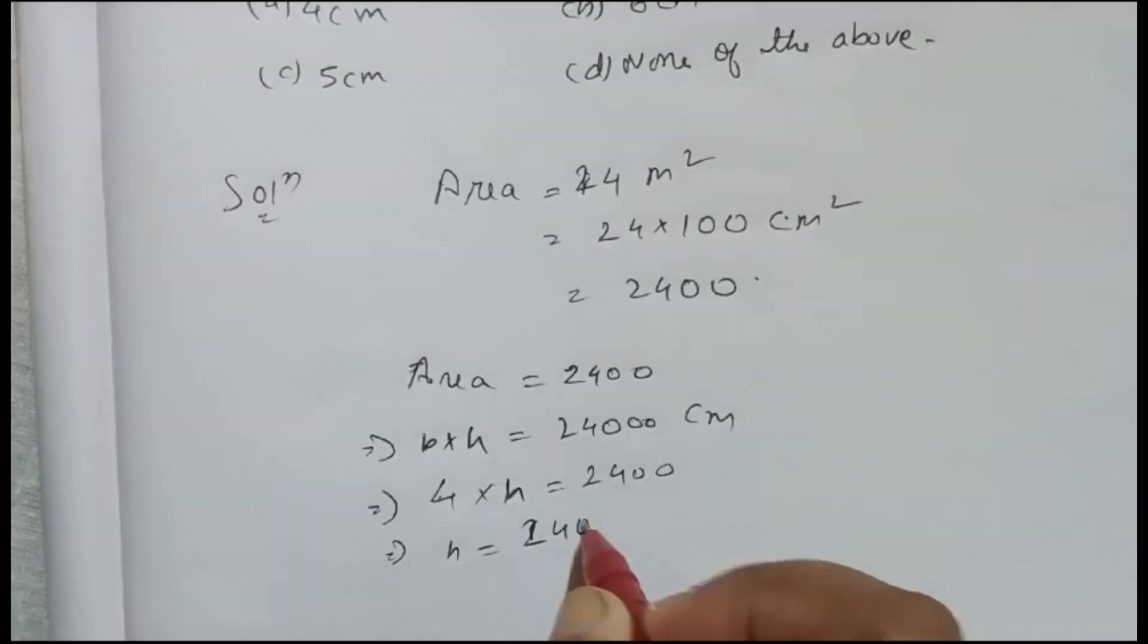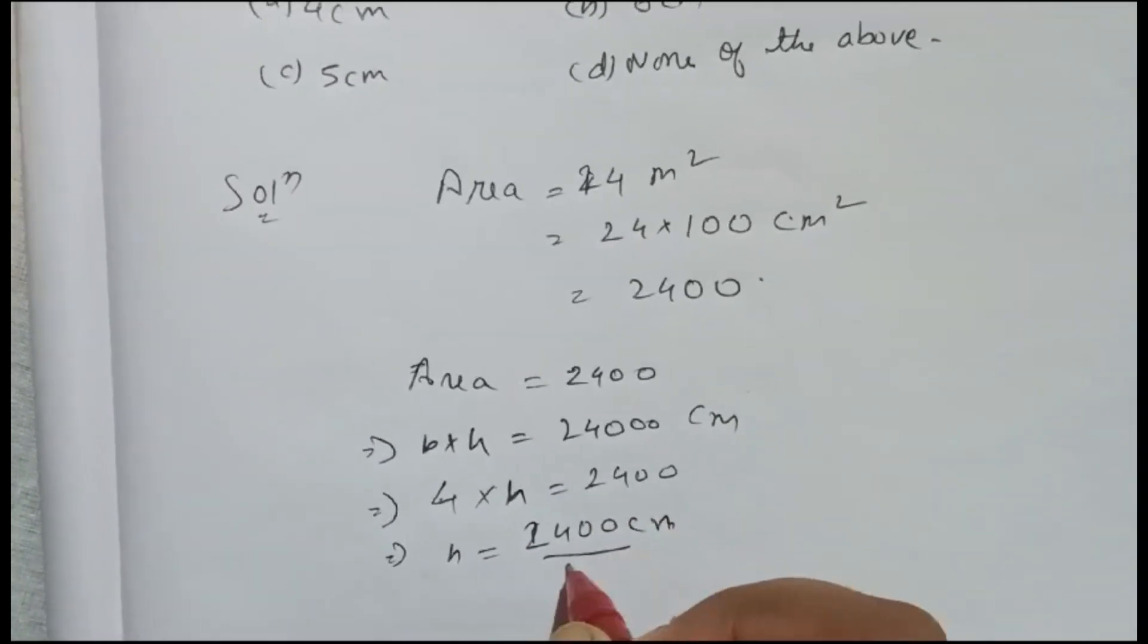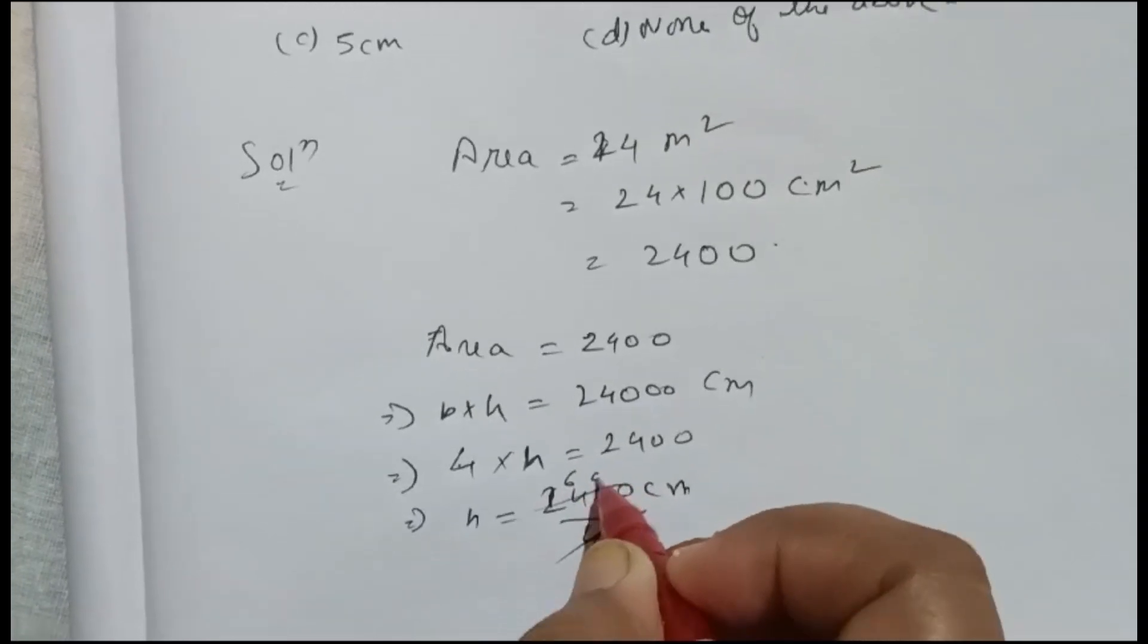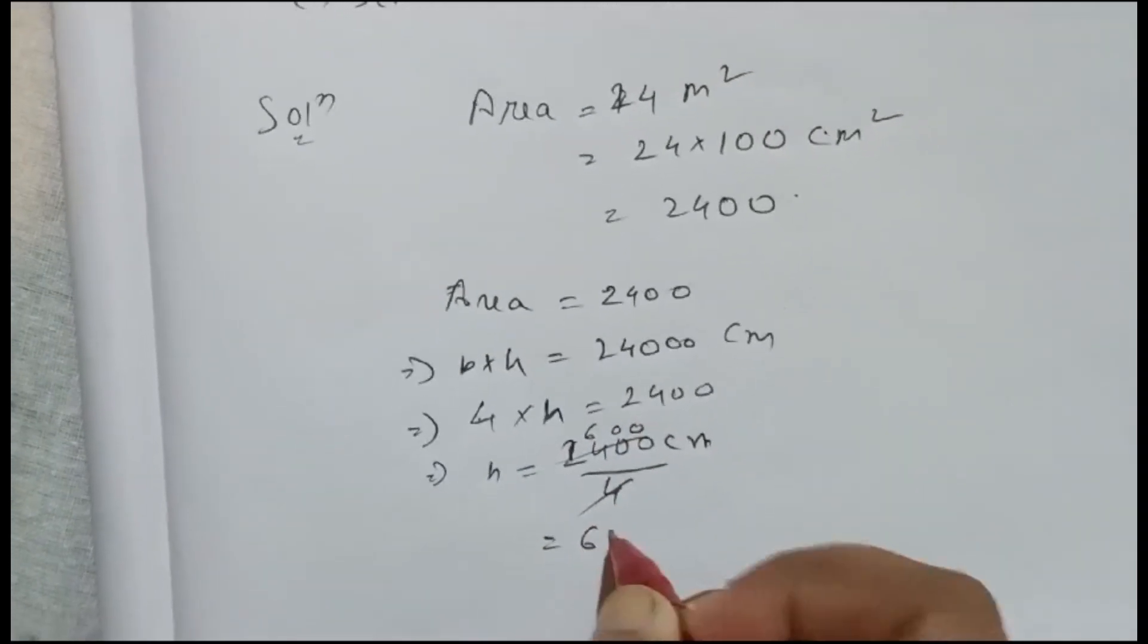Four sixes are 24, and this one zero zero, so the answer is 600 centimeter.